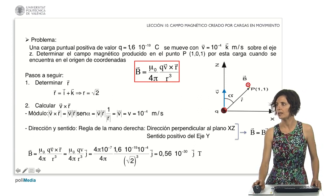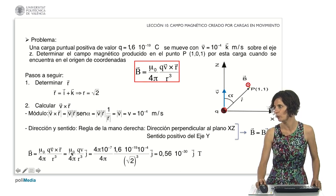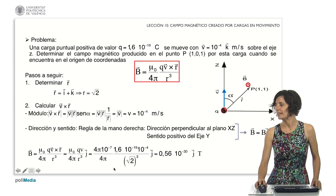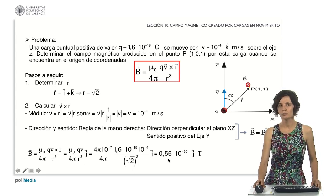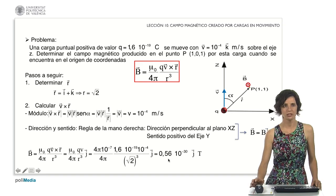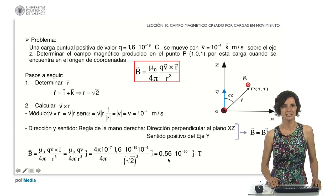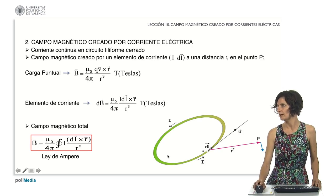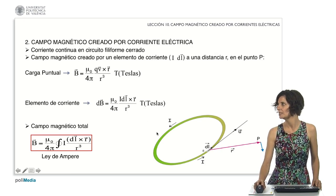To calculate this magnitude, I substitute the values of mu sub-zero, Q, V, and R into the expression, resulting in a final value of 0.56 times 10 to the power of minus 30 Teslas. Let's move on to the second part: magnetic field created by electric currents.